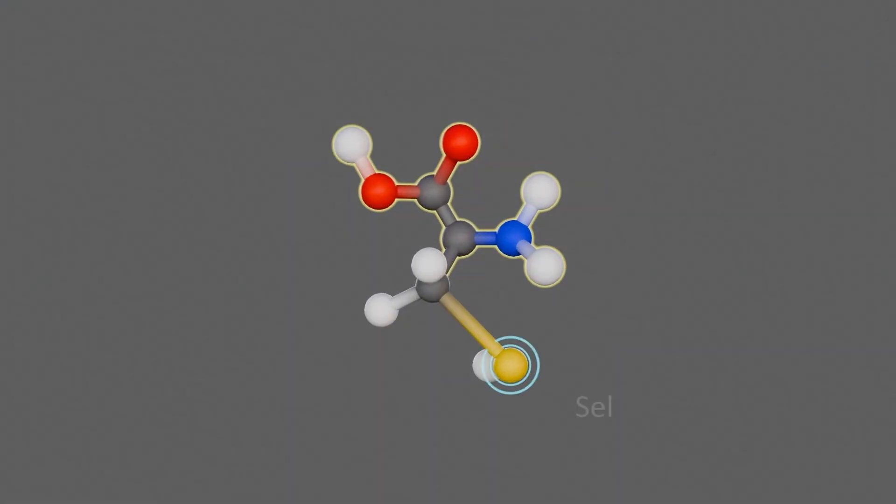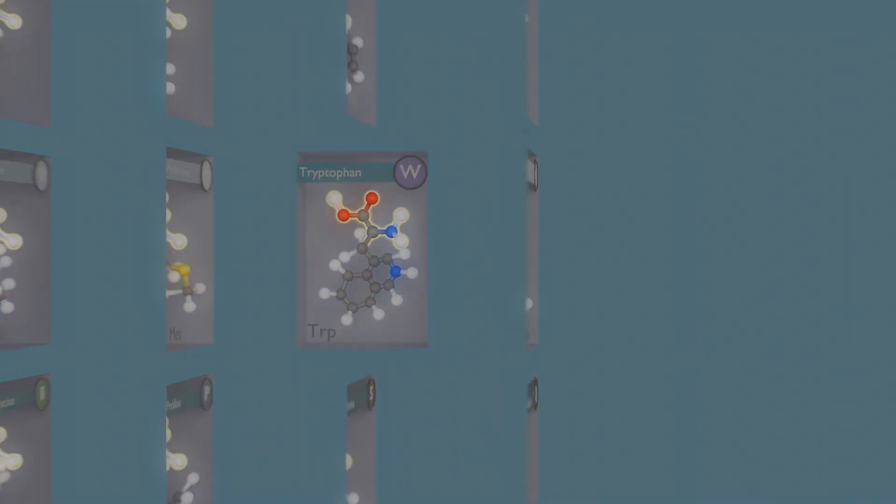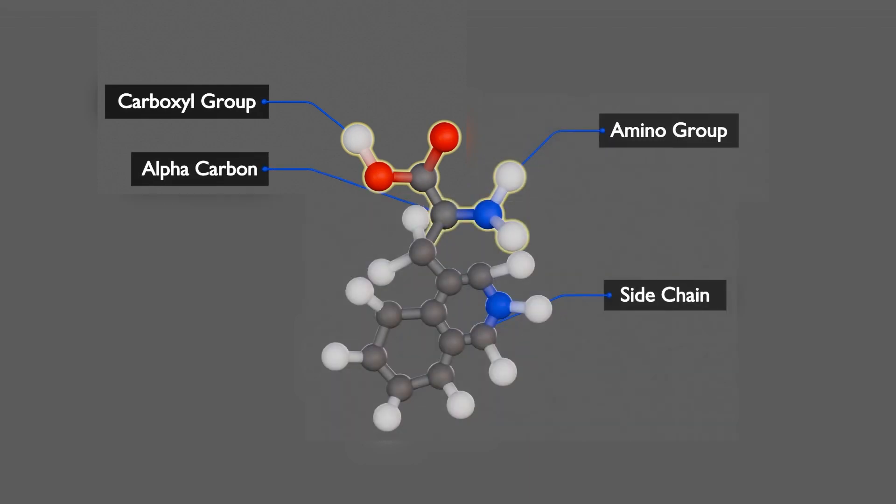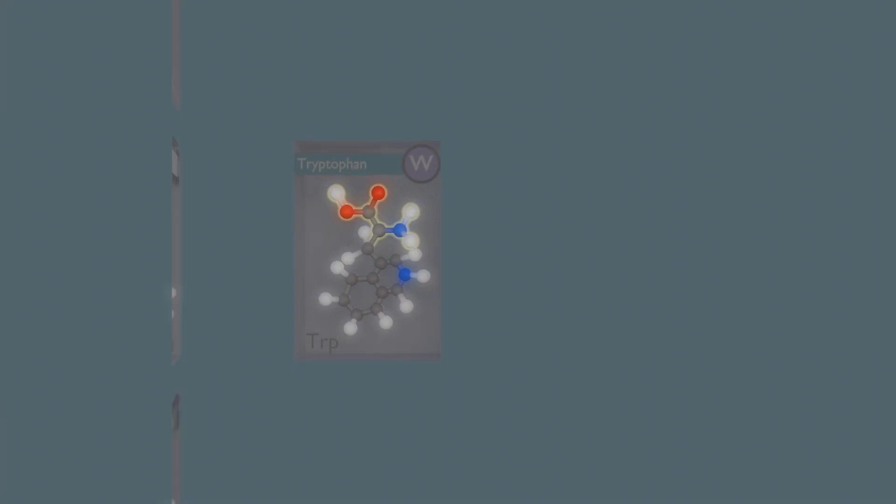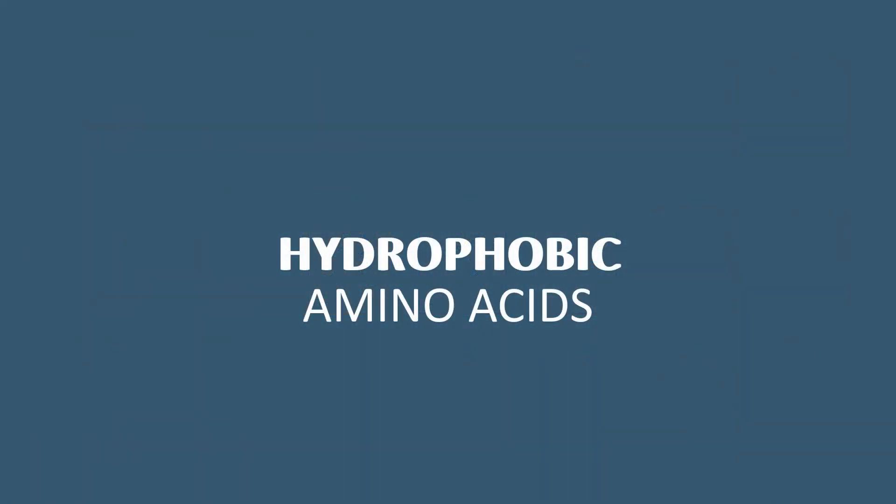Selenocysteine is the only standard amino acid that contains a selenium atom. These atoms form an amino group, a carboxyl group, and a side chain, all attached to a central carbon atom. The side chain determines an amino acid's properties and is the only part that varies from amino acid to amino acid.